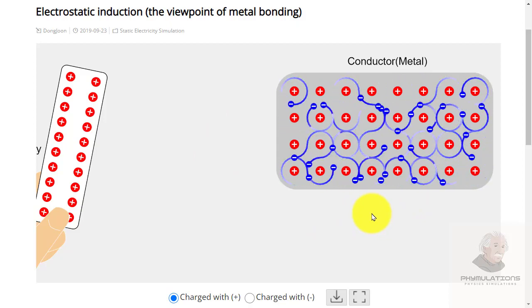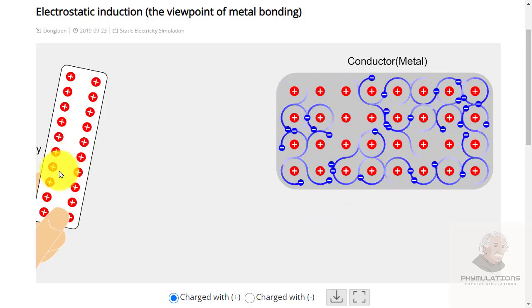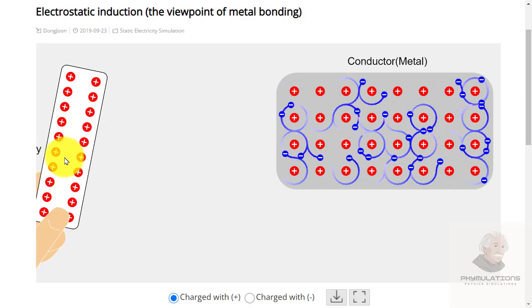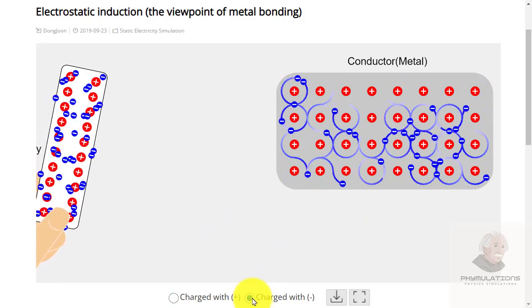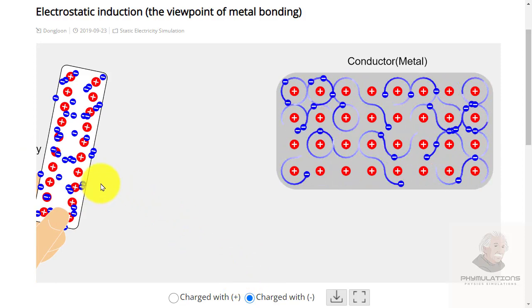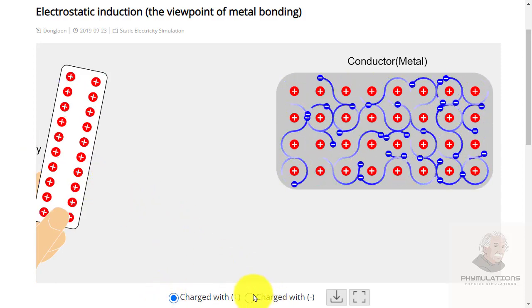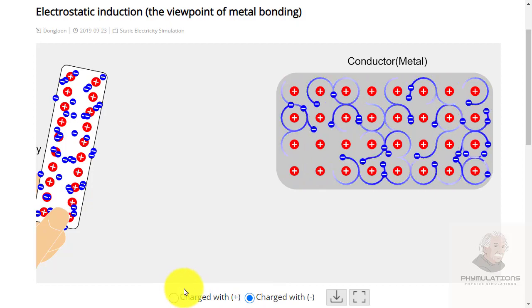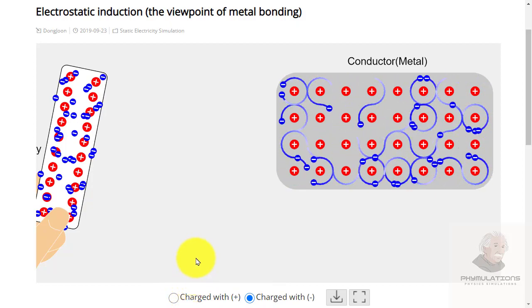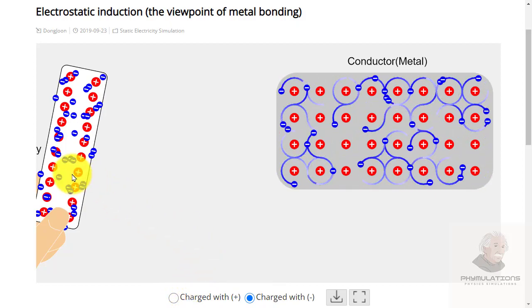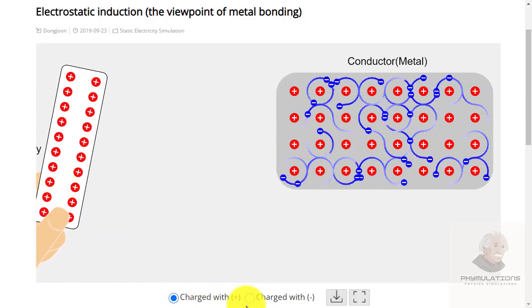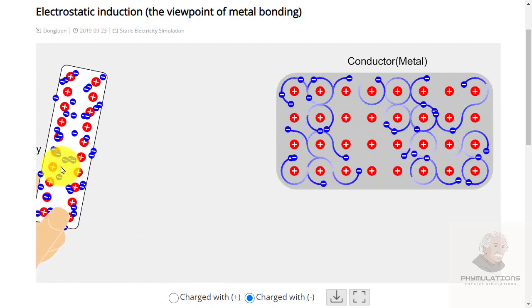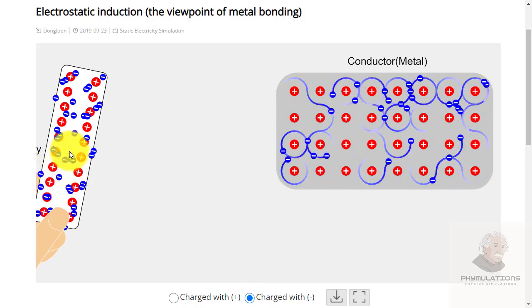There are a lot of electrons which are moving randomly in a conductor. On the other side I have a positively charged body. I can make it negatively charged as well. You just have to observe what will happen if I bring that either negatively or positively charged body near that metal.